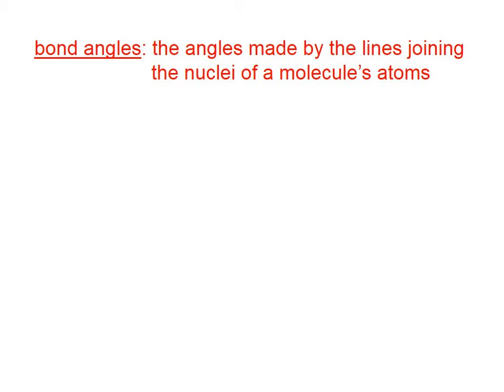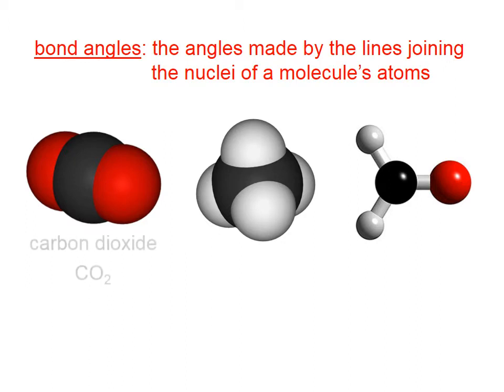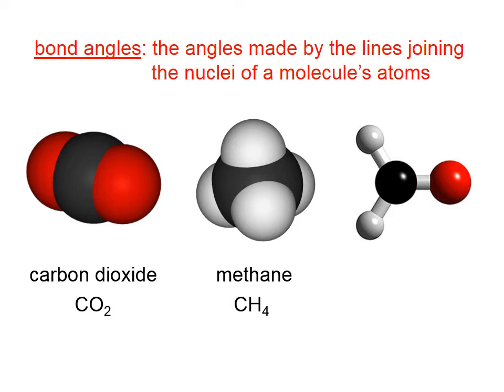Bond angles are the angles made by the lines joining the nuclei of a molecule's atoms. So on the left, we have carbon dioxide. And in the middle, we have methane. And on the right, if the black atoms are carbon atoms and the reds are oxygens and the whites are hydrogens, at the very least, we can figure out that we have one carbon, two hydrogens, and an oxygen. I don't expect you to know this at this point, but that is the compound formaldehyde, which is the common name. It's also called methanol.